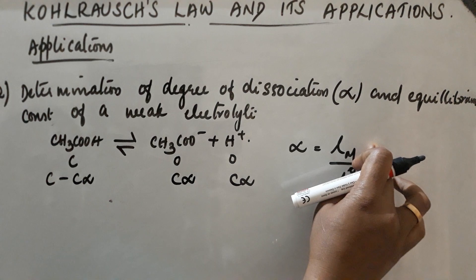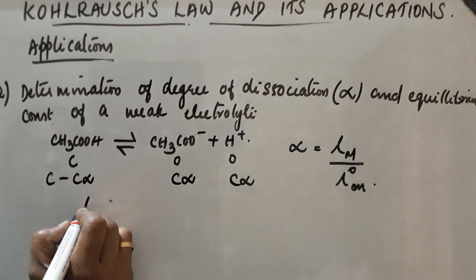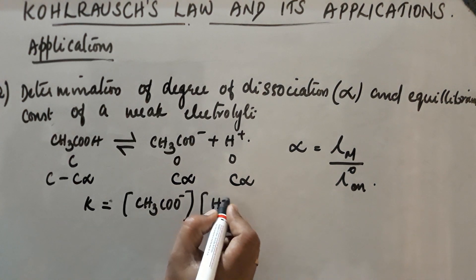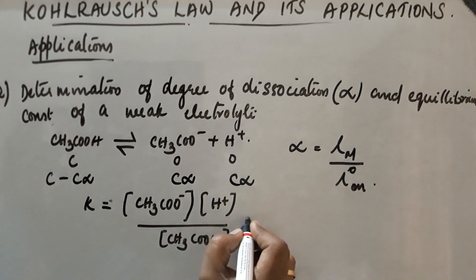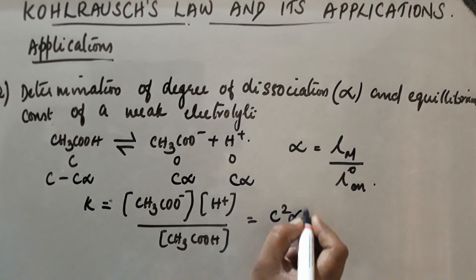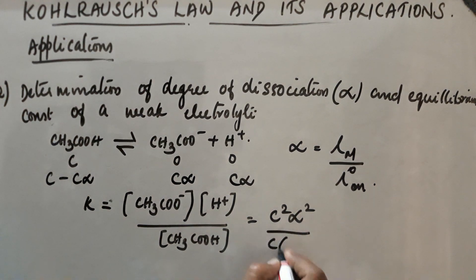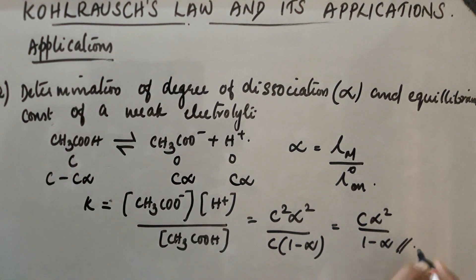We know α = λ_M / λ°, that is molar conductivity at concentration C divided by molar conductivity at infinite dilution. The equilibrium constant K equals the concentration of products divided by concentration of reactants. So K = (Cα × Cα) / (C × (1 − α)) = C²α² / (C(1 − α)) = Cα² / (1 − α).